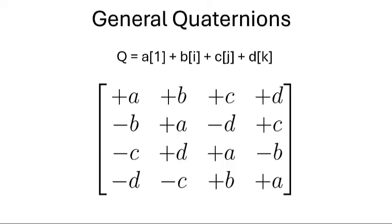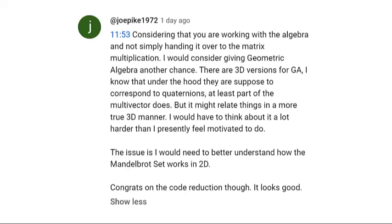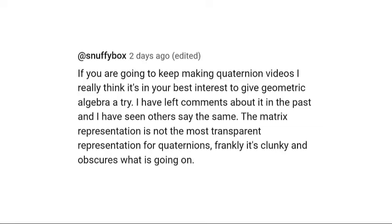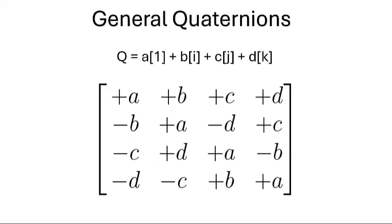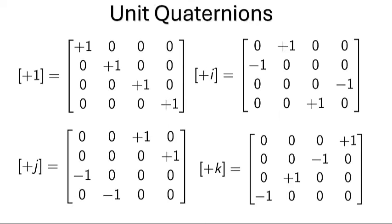What I'm trying to do is unobscure and disambiguate what quaternions are. When you implement quaternions as 4x4 matrices, you can clearly see what i, j, and k correspond to. You can see that i, j, and k are constants — they are unit rotations.